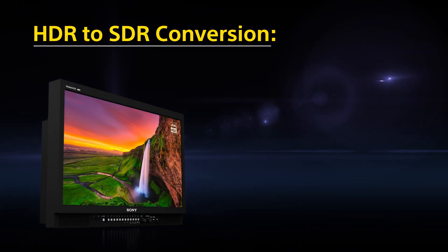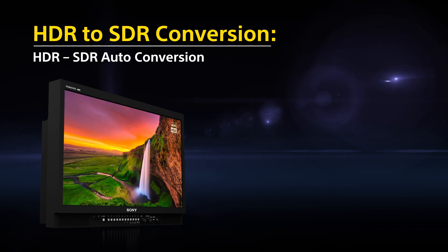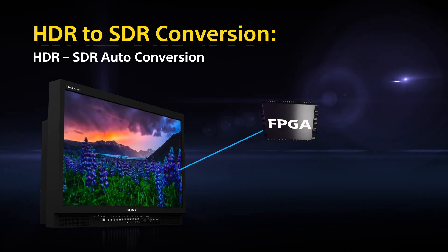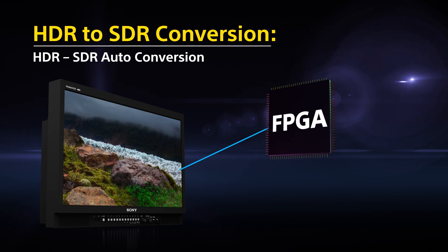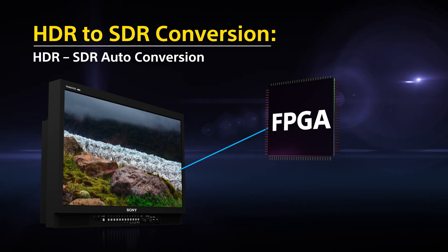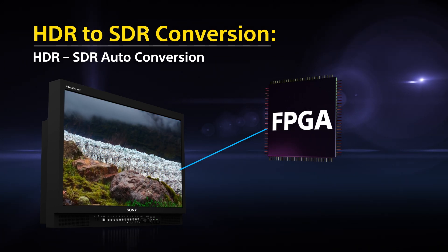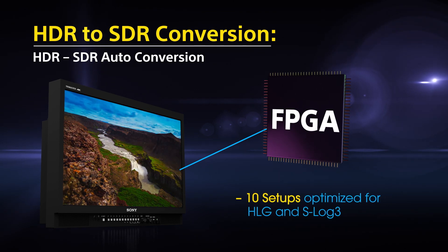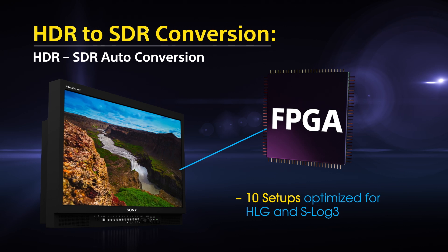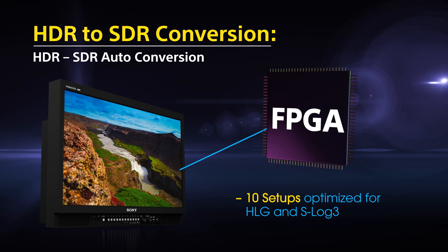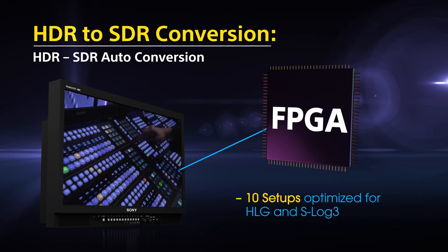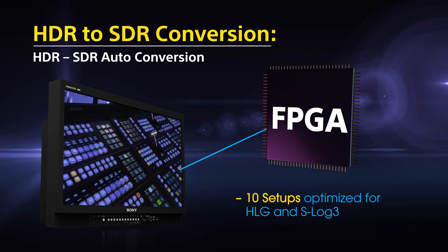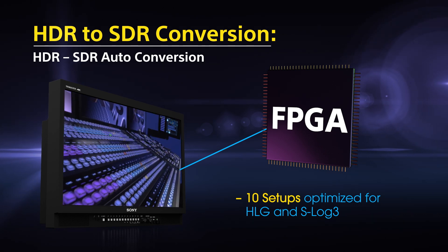The PVM X monitors also support auto HDR to SDR conversion without a LUT. This method utilizes an FPGA chip in the monitor to perform the conversion based on a set of pre-programmed conversion setups. There are 10 setups available and each can be adjusted and saved to suit your specific content. The setups are optimized for HLG and S-Log3 content typically used in live event production.